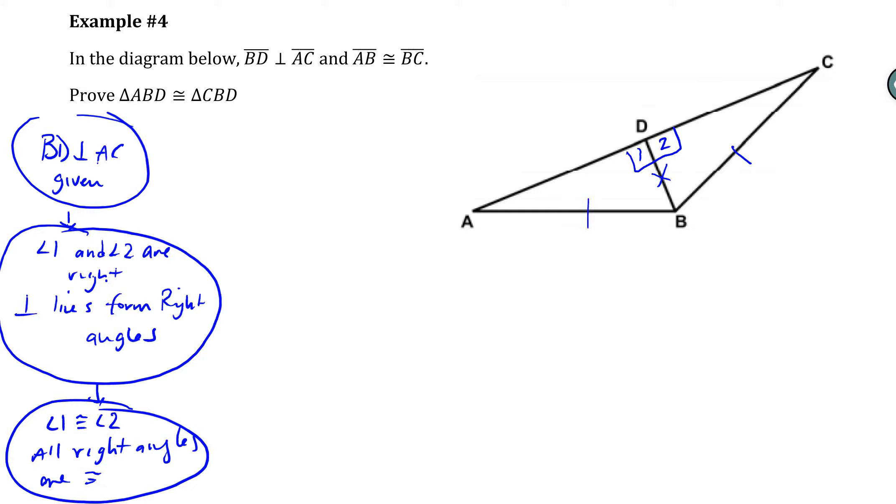So now we know that those two angles are congruent. We also know that AB is congruent to BC by the reflexive property of congruence. And we said that BD was congruent to BD.